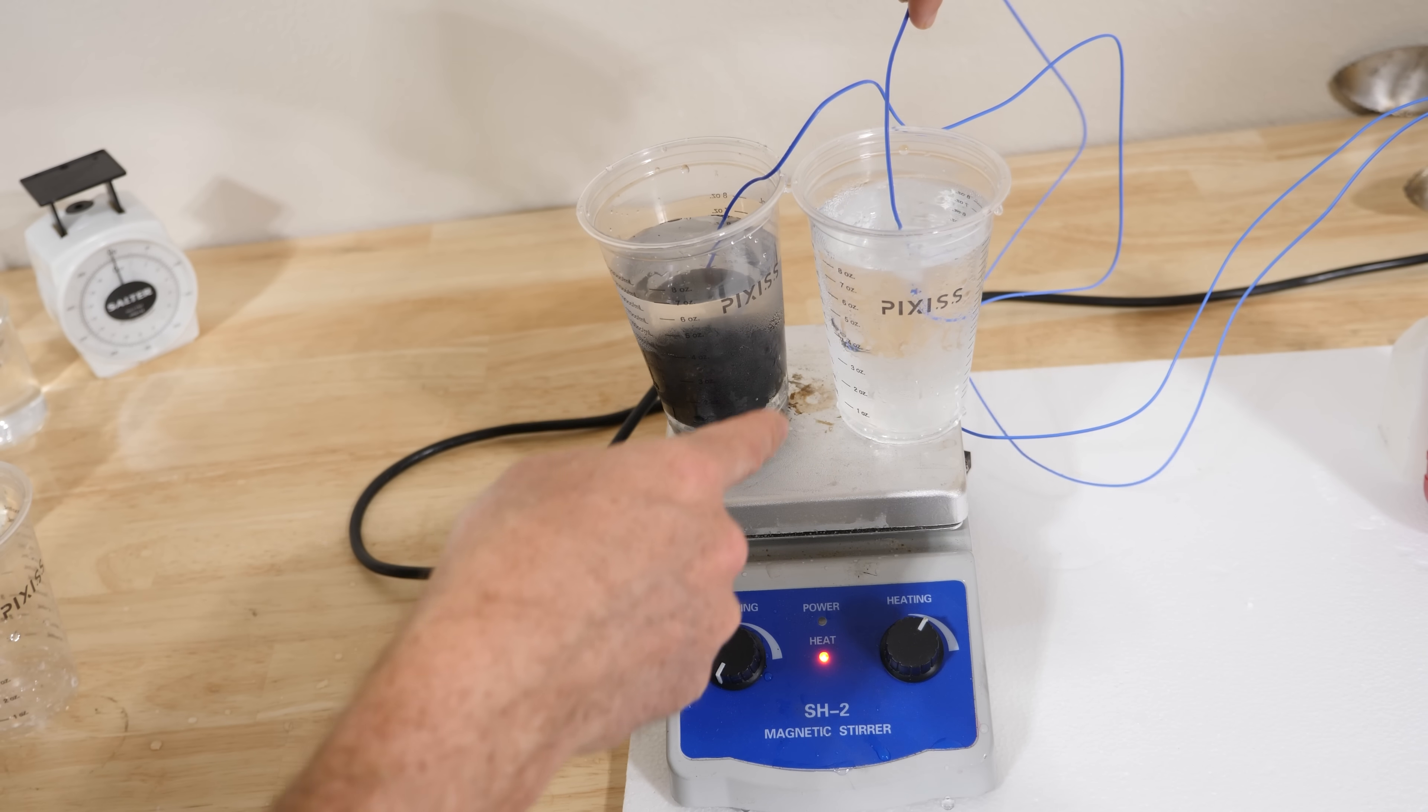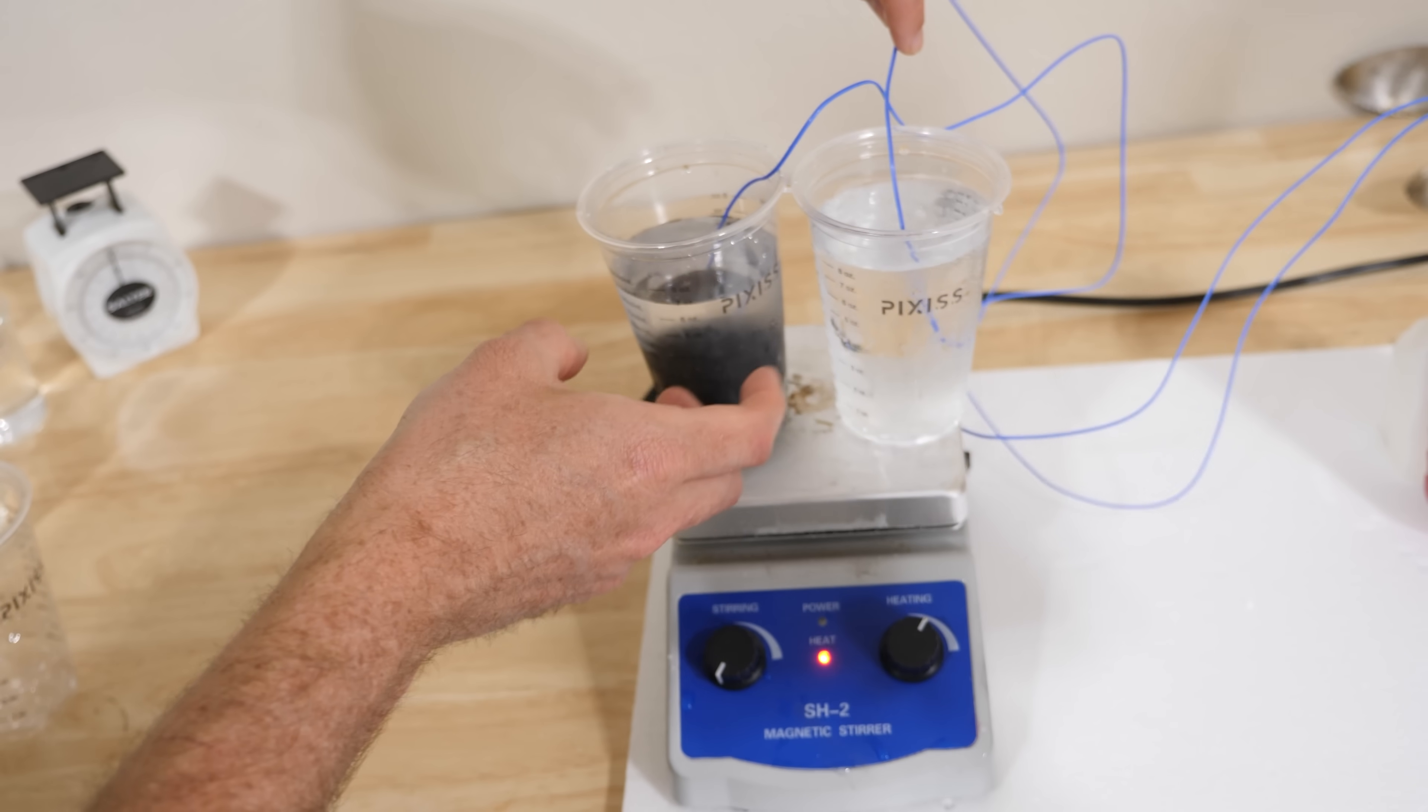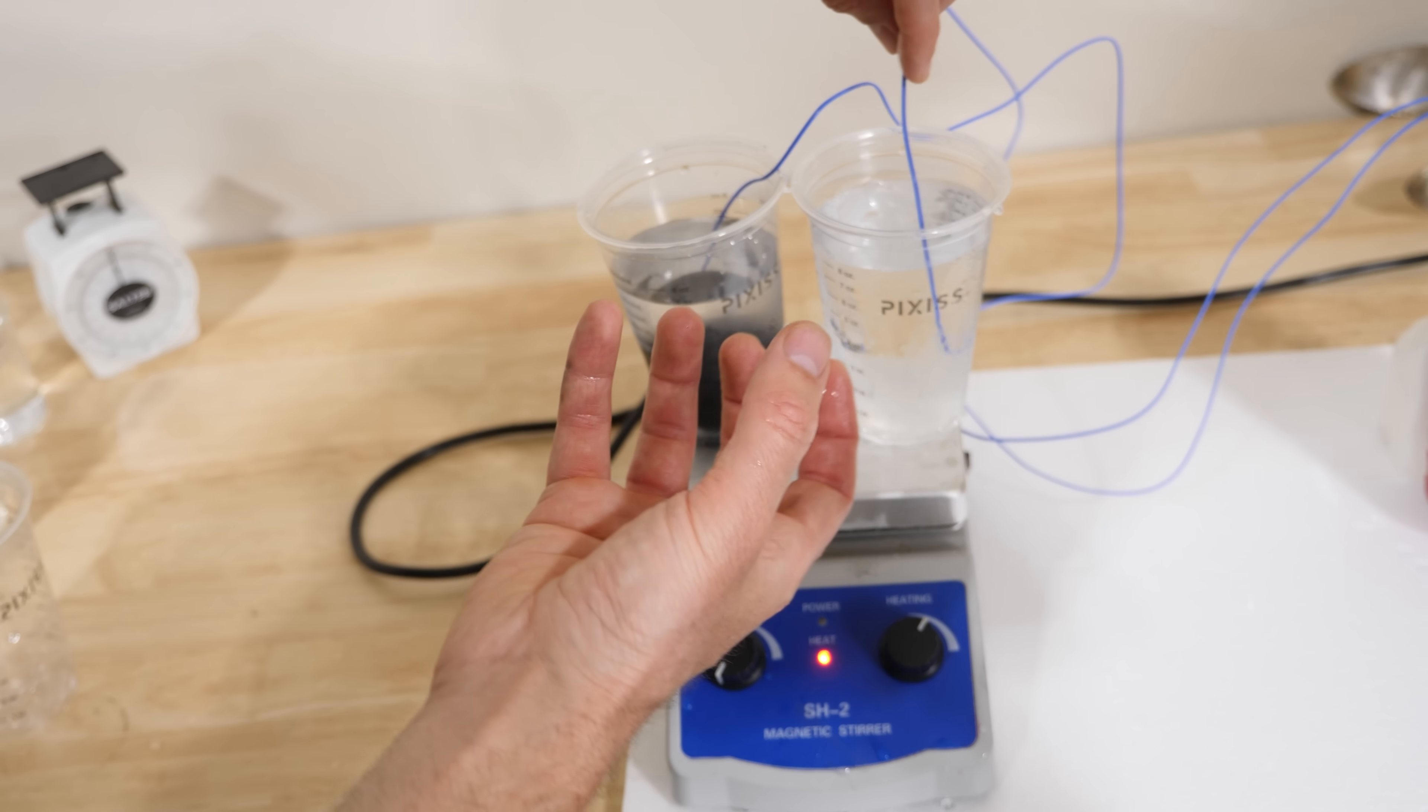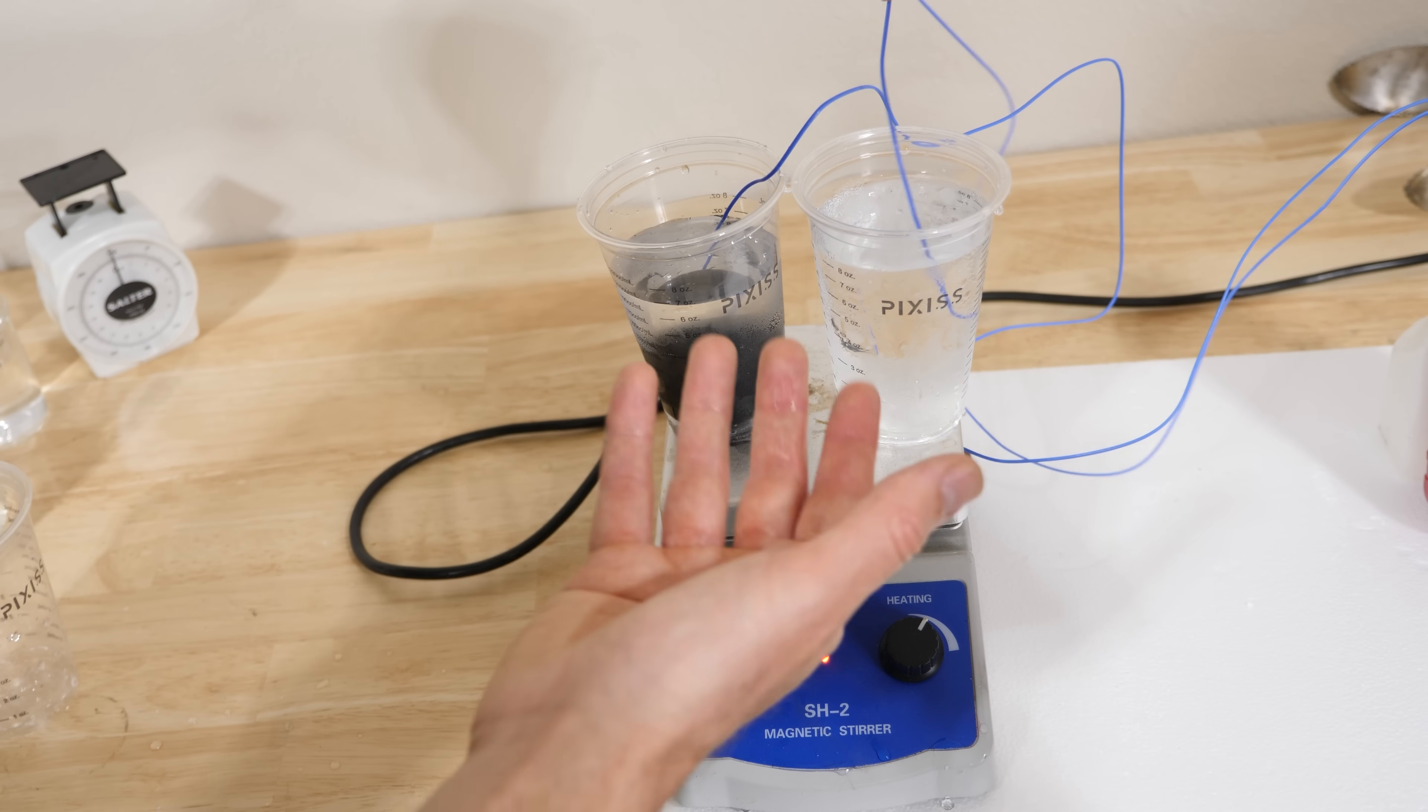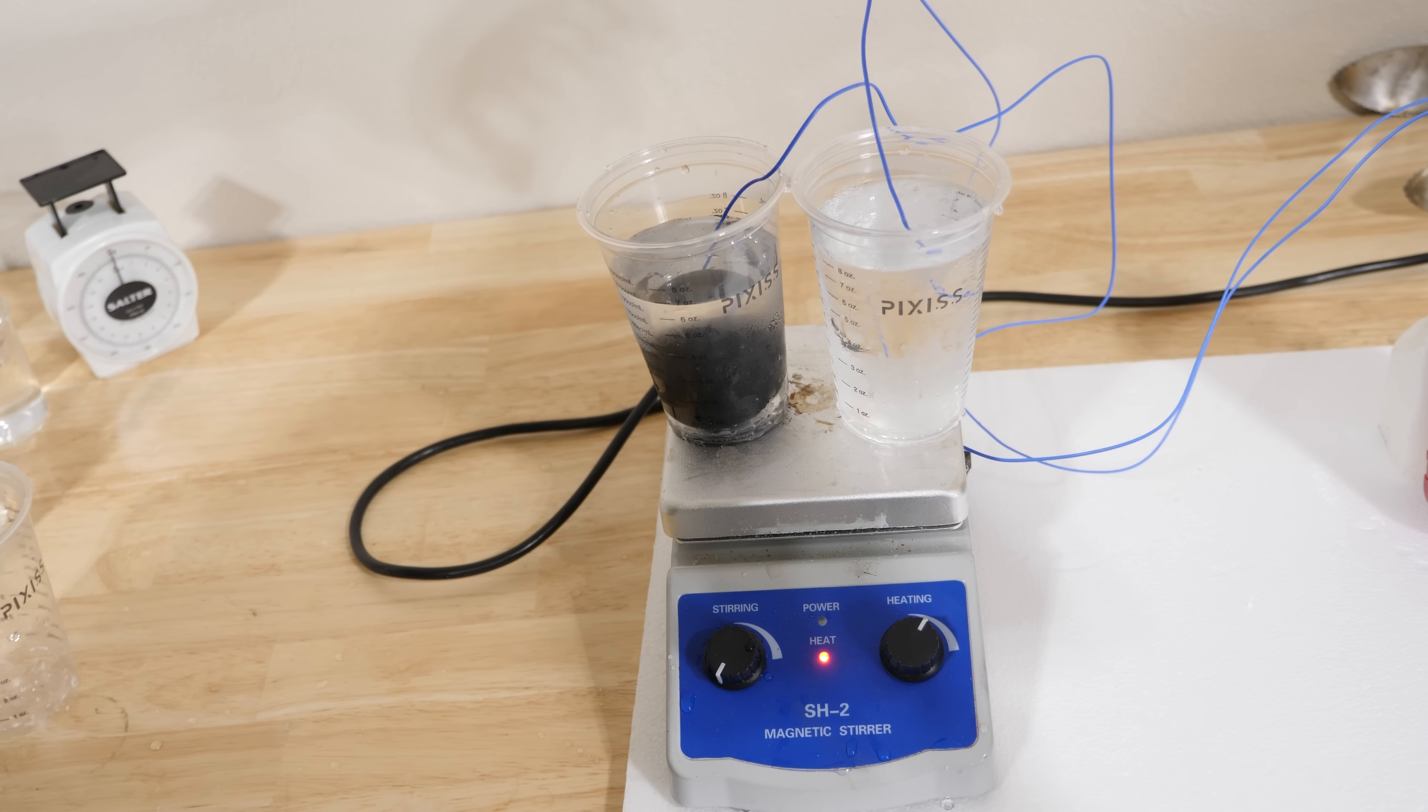But if you keep heating these, you can see that this one actually starts to heat up a little bit more. Because it can't absorb as much heat. Because there's a solid block of iron in there instead of water. And remember, water can absorb 10 times the amount of heat than iron. So even in this case, when we try to match them exactly, it turns out that just water ice cubes are better than pure iron.